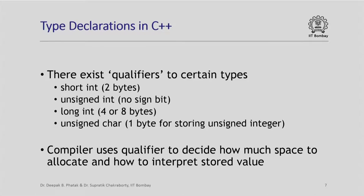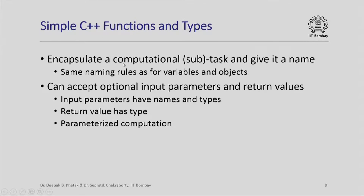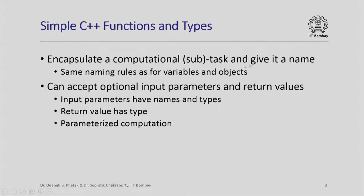Types and names are important not only for variables but also for functions in a program. A C++ function is basically a computational subtask which you encapsulate within braces and then give a name. So a name is needed to identify a C++ function which will do a computational task or subtask, and the naming rules are the same as for variables. A function can also accept optional input parameters and can return values; these input parameters must have names and types, and similarly the return value must have a type. When a function has parameters, what it represents is a parameterized computation.